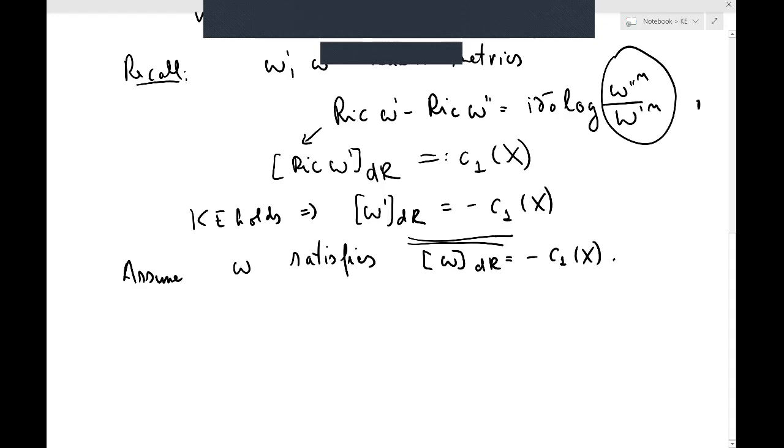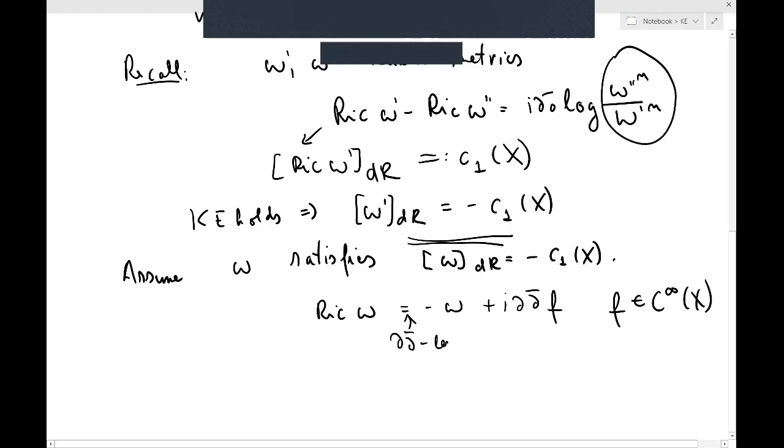So if this is the case, then going back to the discrepancy, then a bit of Hodge theory tells you what? Well Ricci of omega is from c_1(X), and negative of omega is also from c_1(X), so they're from the same cohomology class. So by the ∂∂̄ lemma, there exists a smooth function so that this identity holds.